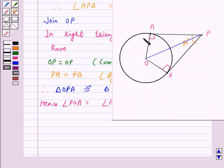That is OP bisects angle AOB and angle APB. Therefore, angle APO is equal to angle BPO.